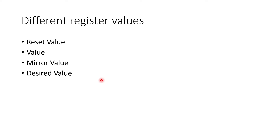Before moving to that, let's discuss different register values. Whenever we are defining a register and adding it to the register block, the simulator maintains four different values: reset value, value, mirror value, and desired value. The reset value, as the name suggests, is used for resetting the register. The value is a rand type property, so we can randomize it in the future.